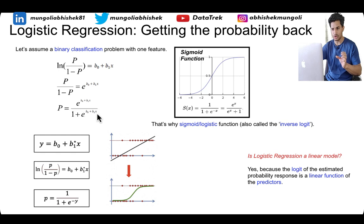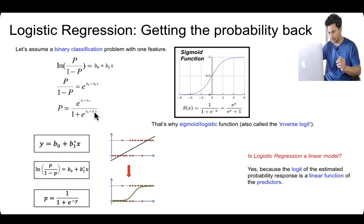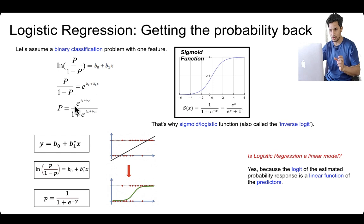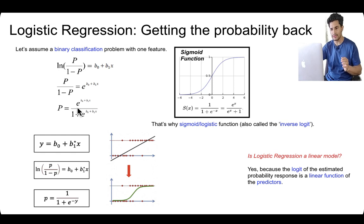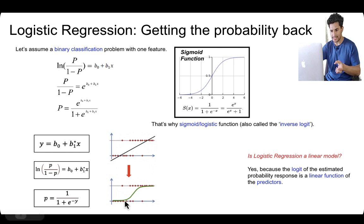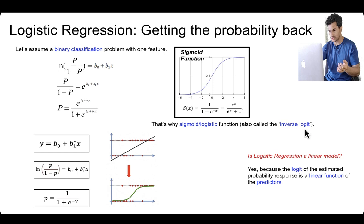If we solve to get probability back from log of odds, p comes out to be e^(b₀ + b₁x) divided by 1 + e^(b₀ + b₁x), where b₀ is the intercept and b₁ are the coefficients of the features. This is also called the sigmoid function — it can be written as 1 / (1 + e^(-x)) or e^x / (1 + e^x), where x in our case is the linear equation b₀ + b₁x. So in logistic regression, we regress features to predict log of odds, and apply sigmoid to get probabilities ranging between 0 and 1.